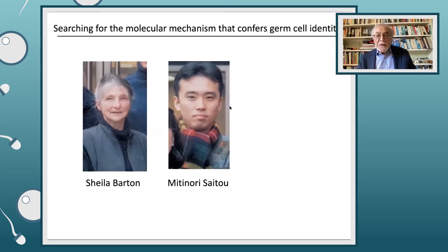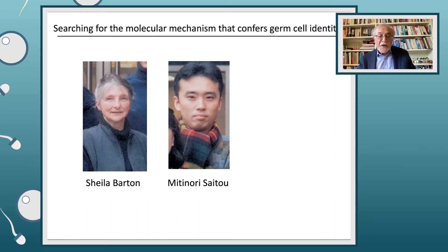There were two people who were extremely important and ensured success for this work. The first is Sheila Barton, an exceptionally talented embryologist. The second person who joined my lab, just finishing his PhD from Kyoto, was Mitinori Saitou. These two people were really quite central to the work, and I think this experiment is really one of the crucial ones in my opinion.